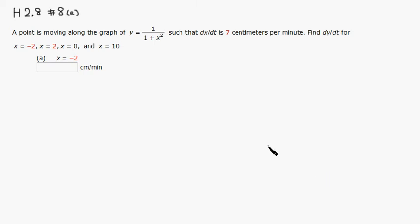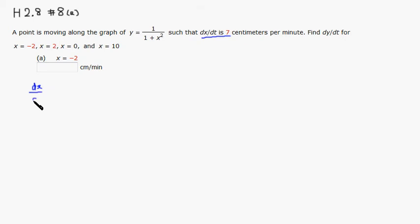Let's go over Hallmark 2.8 number 8 part a, since the other parts are very similar. The given values are: dx/dt is 7 centimeters per minute, and for part a, x is equal to negative 2.